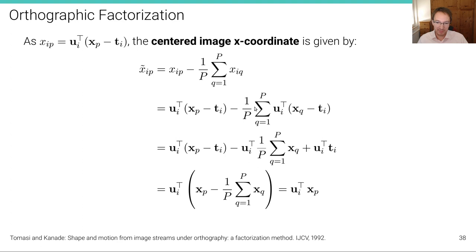Now, let's have a closer look at the second expression. So in the second expression, this term here does not depend on q, so we can pull it outside. And we can also pull ui transpose ti outside this expression here, this summation, because it also doesn't depend on q. So we get this expression here.